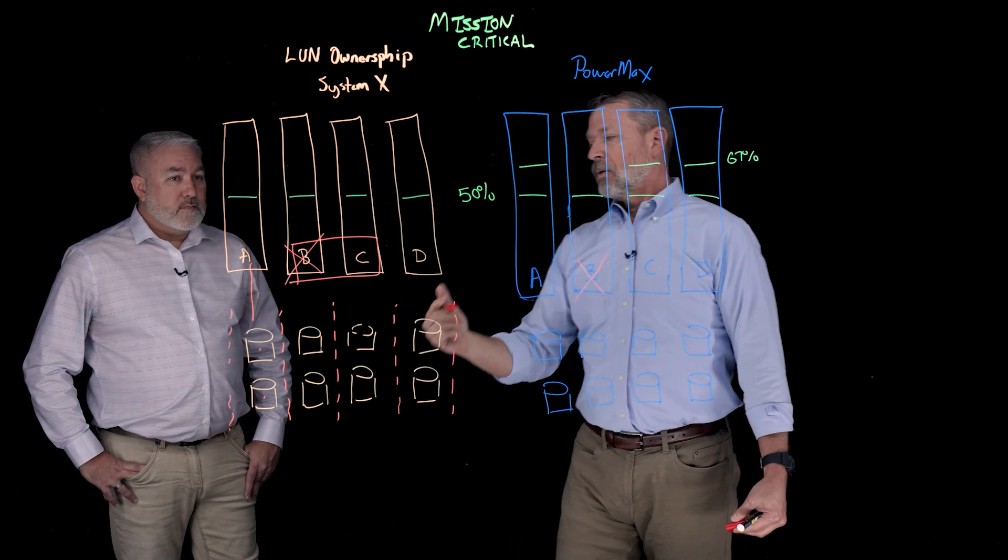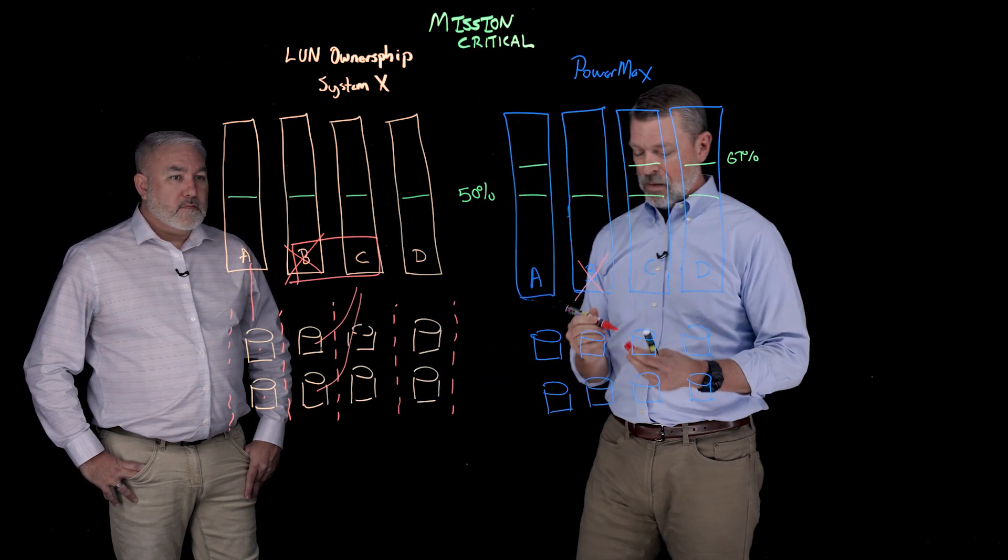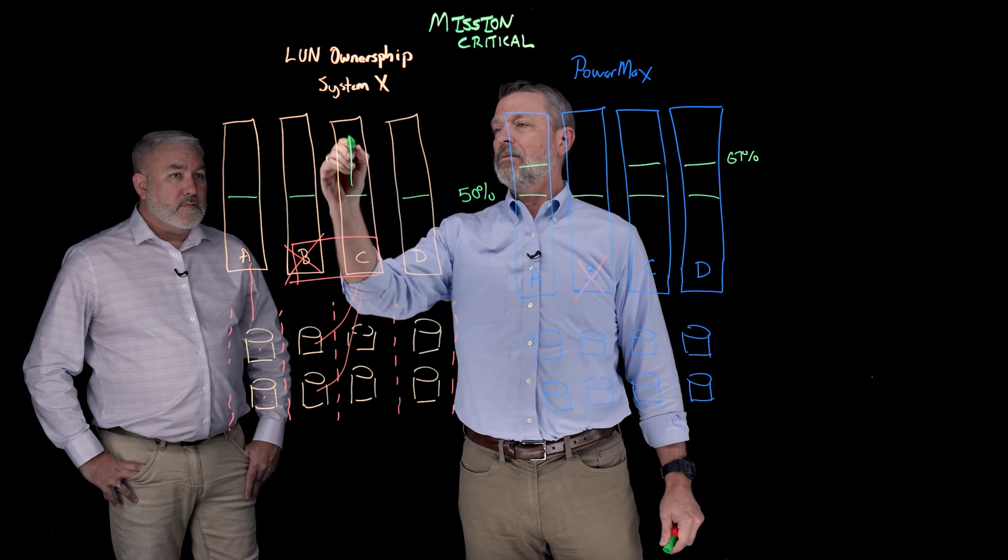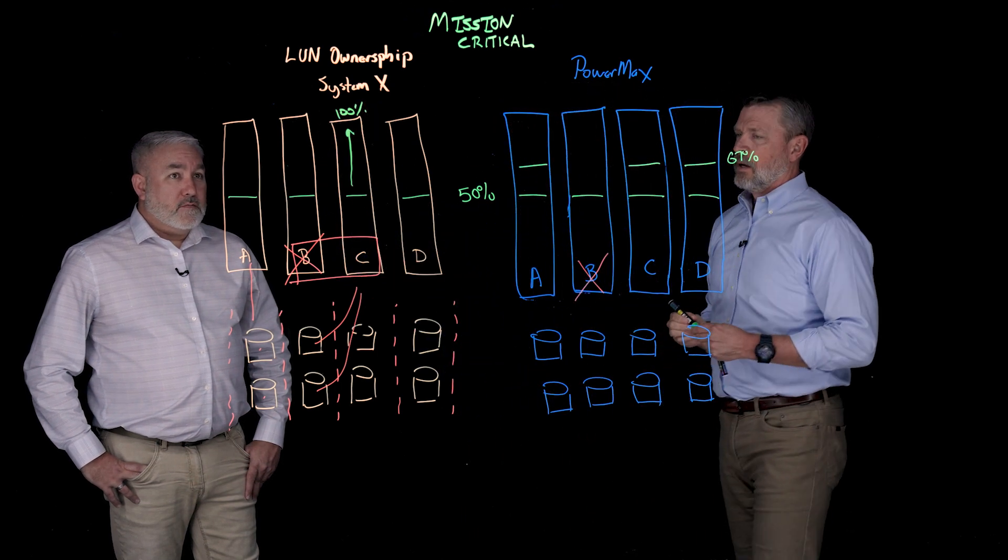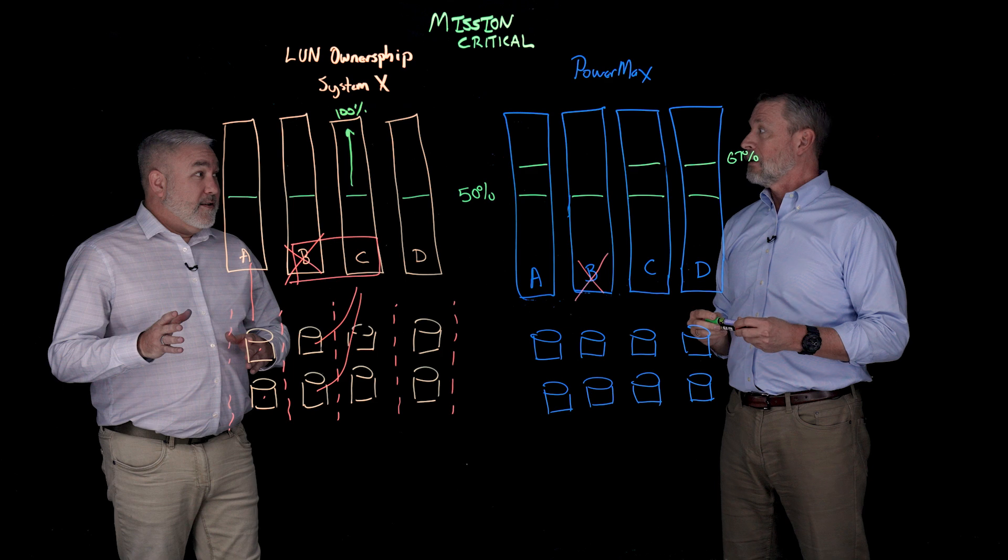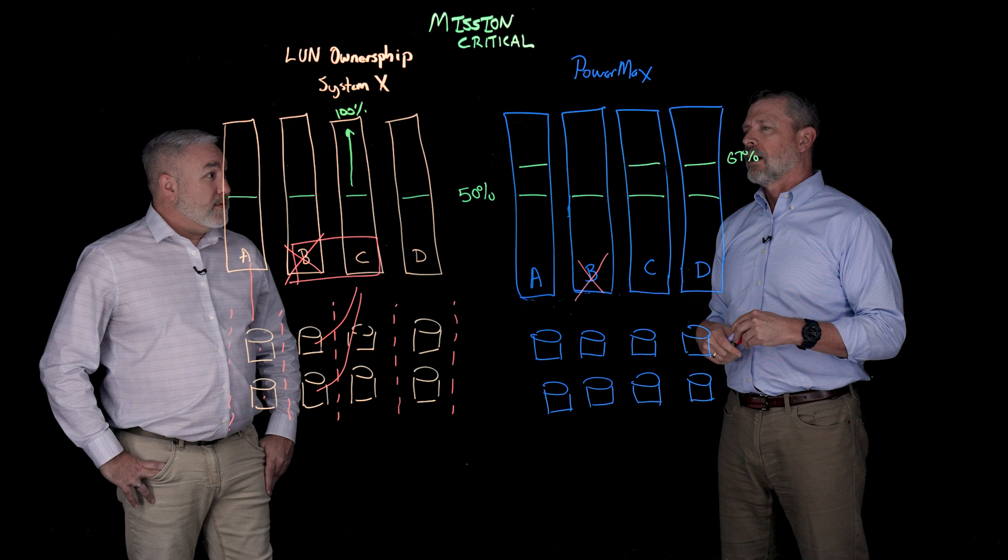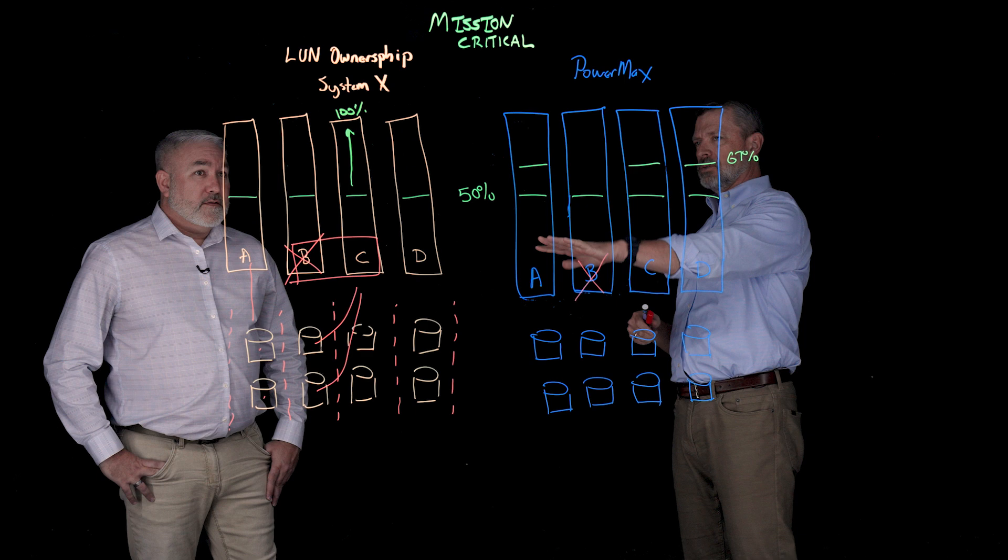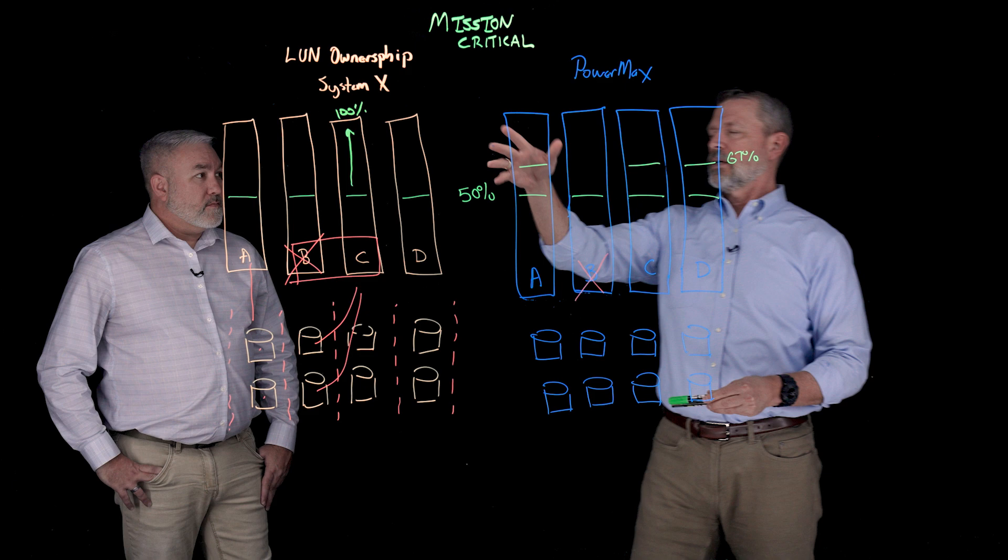But let's just take it through this very realistic scenario here of that same four controller architecture running at 50% utilization and same exact failure mode. We lose node B. Now, all the I/Os that were associated with controller B are having to go to C because that's who I paired it to. And lo and behold, my utilization on node C just went to 100%. Now, I was born at night, not last night, but 100 is bad.